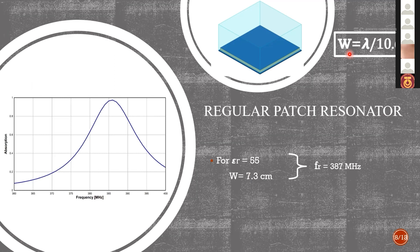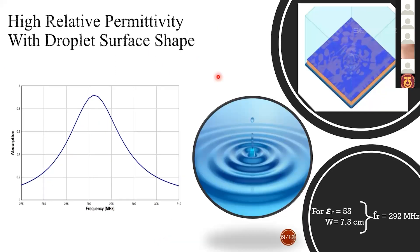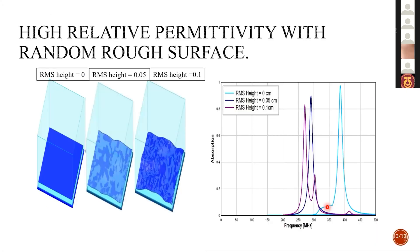Now the rough surface is applied. The first form of rough surface is the shape of the droplet surface inspired with the surface of water. The application of this roughness occur a shifting in the resonant frequency to 292 megahertz with the same condition, that is equivalent to lambda over 14.